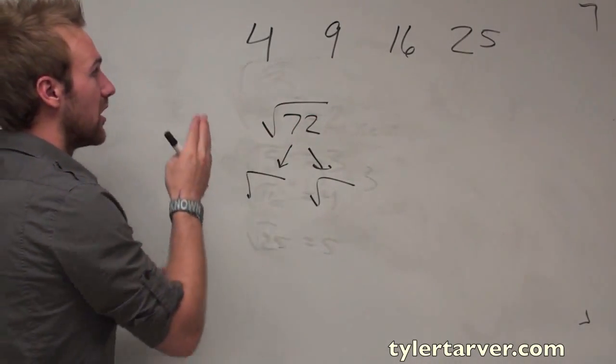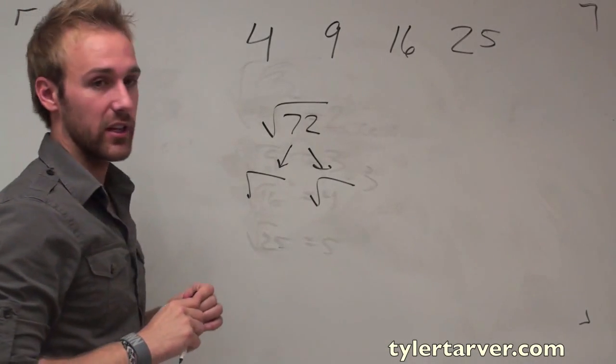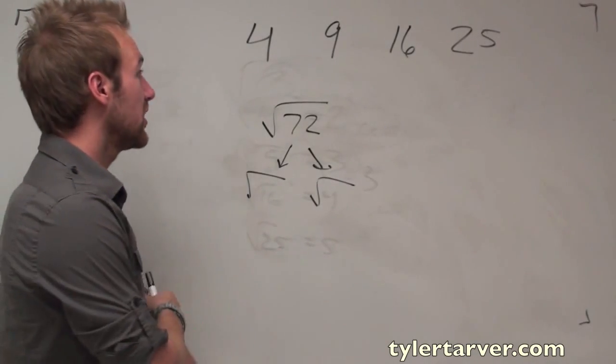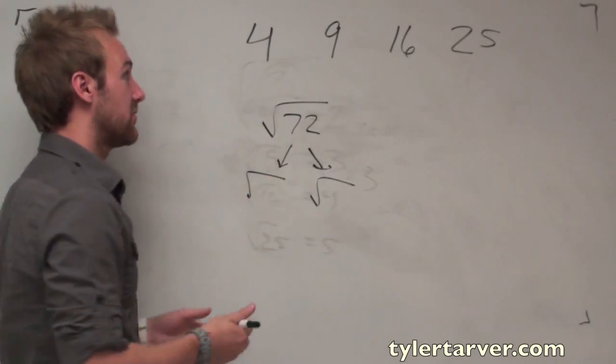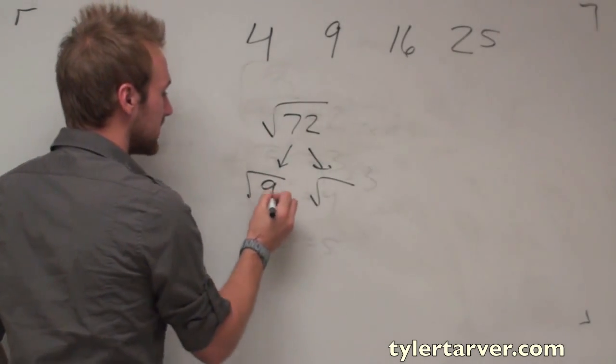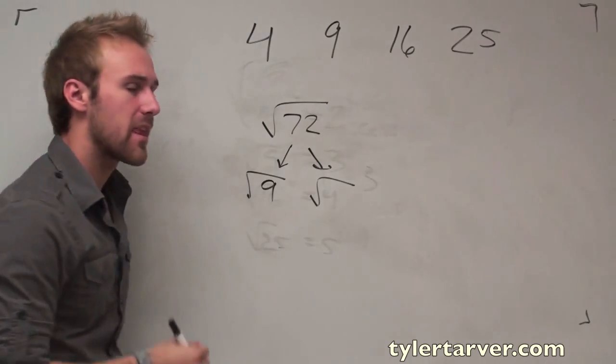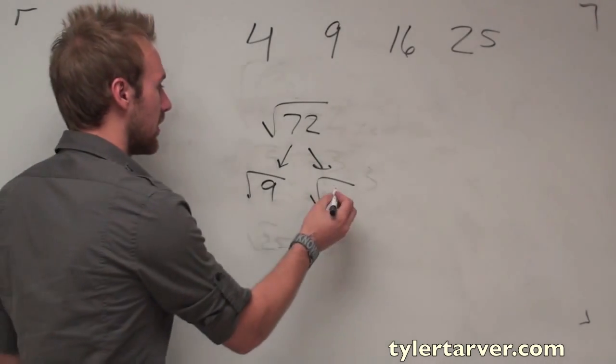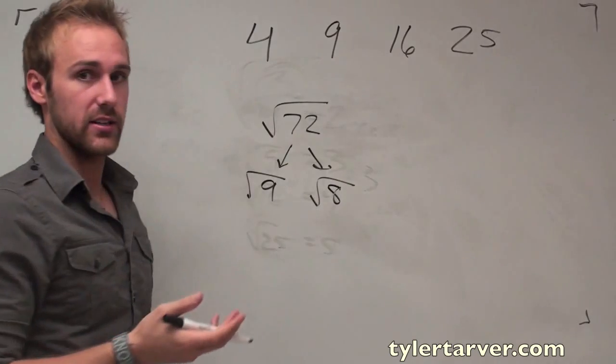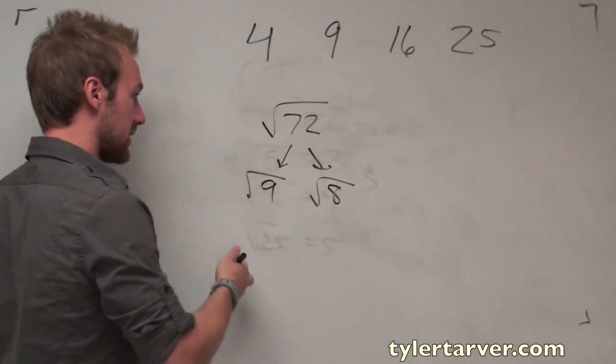So we've got radical seventy-two. Do any of these numbers go into seventy-two evenly? Yes. Actually, a few of them do. We're going to go with nine, because I'm sure that's the one that jumped out at you first. So, I can bust it out and put nine there. What times nine equals seventy-two? Eight, correct? Yeah. Nine times eight is seventy-two.